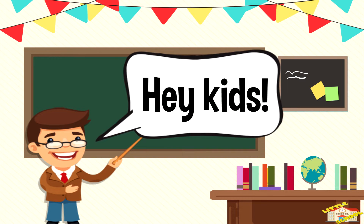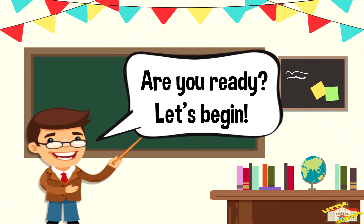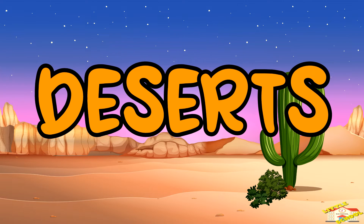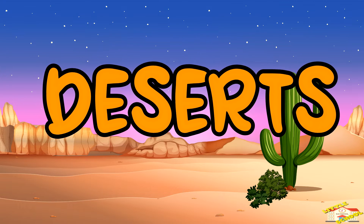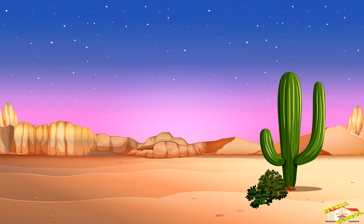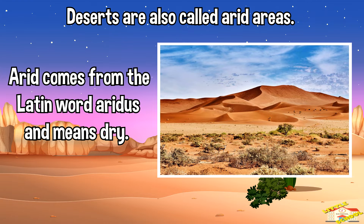Hey kids, in today's video we will be learning about deserts. Are you ready? Let's begin. Deserts are found on all seven continents. Deserts are also called arid areas. Arid comes from the Latin word 'aridus' and means dry.